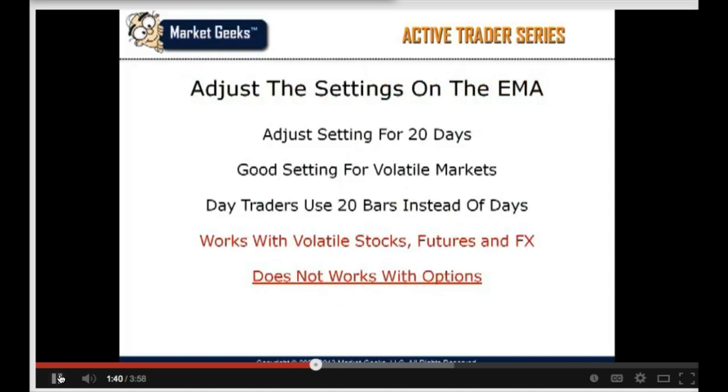The first thing you need to do is adjust the exponential moving average to 20 days. The 20 days is a good starting point for most volatile stocks, futures, and currency markets. If you're day trading, use 20 bars instead of days.